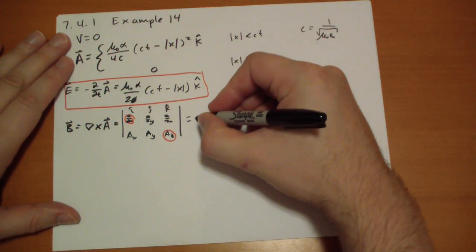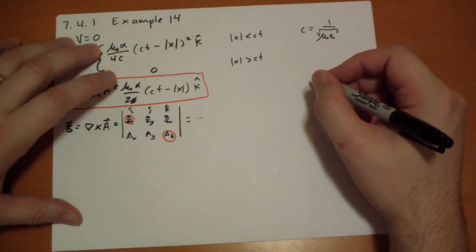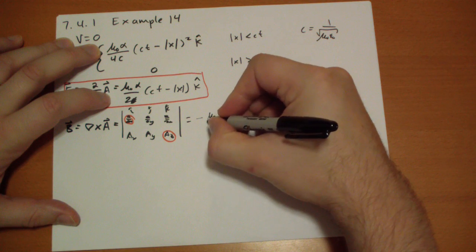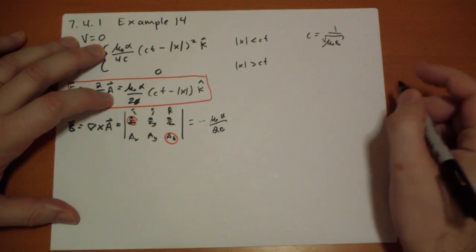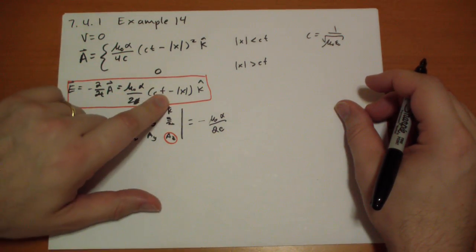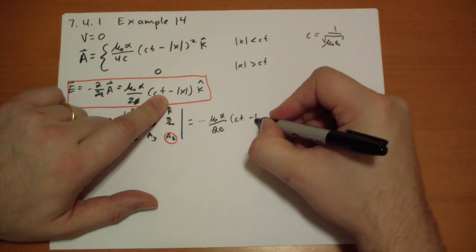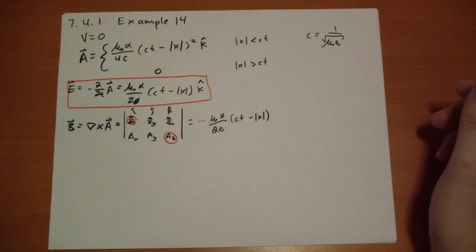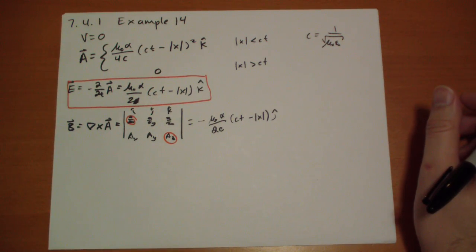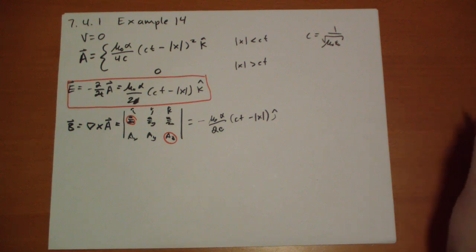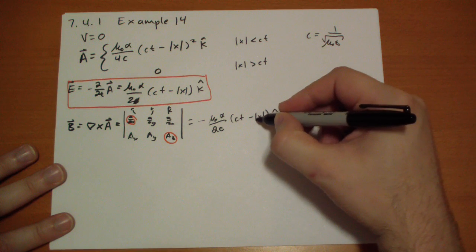It's j-hat times this minus that. So we have to minus the x-derivative of this guy. So we have mu-naught alpha all over 2. The c is going to stick around.